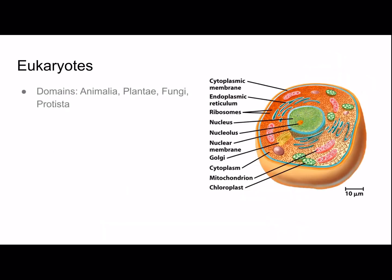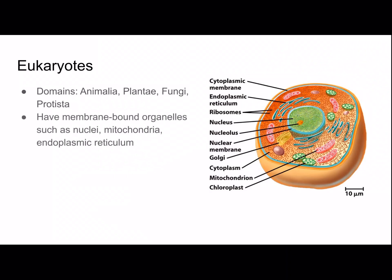Eukaryotes are in four domains: animalia, plantae, fungi, and protista. They have membrane-bound organelles such as nuclei, mitochondria, endoplasmic reticulum, and many more that we'll talk about throughout the video. They evolved from prokaryotes and are more complex life. Here's a picture of a eukaryote and we'll talk about the parts of a eukaryote shortly.